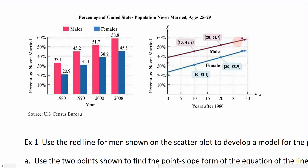Here we have another way of representing the same information: a scatter plot with females shown in blue and males in red. If we let 0 be the number of years after 1980 along the x-axis, and the percentage of those not married along the y-axis, then the point (0, 20.9) represents the 1980 female data. We move in the x-direction and y-direction to locate that coordinate on the graph.